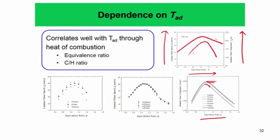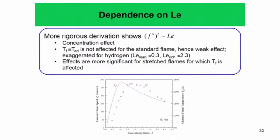Because the flame speed to leading order depends on adiabatic flame temperature, it does not change at all between butane and heptane — this is called fuel similarity. From n-butane to n-heptane, the flame speed does not change, and the reason is purely that the adiabatic flame temperature also does not change.